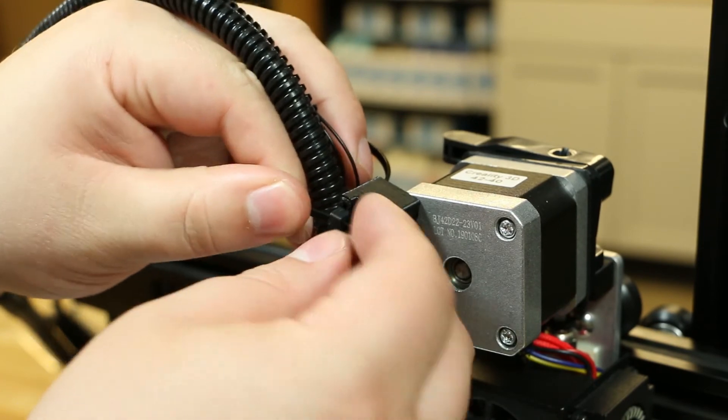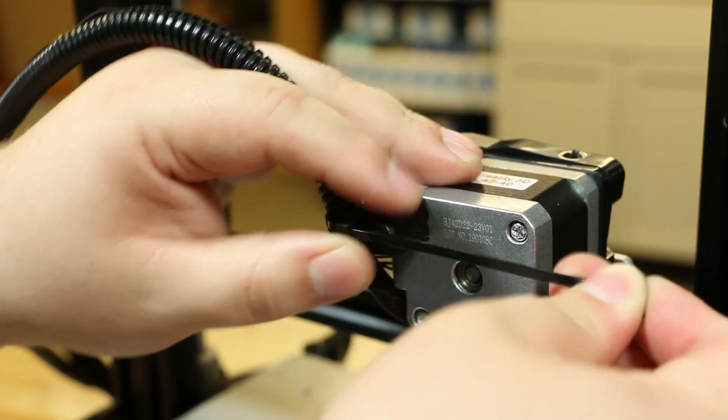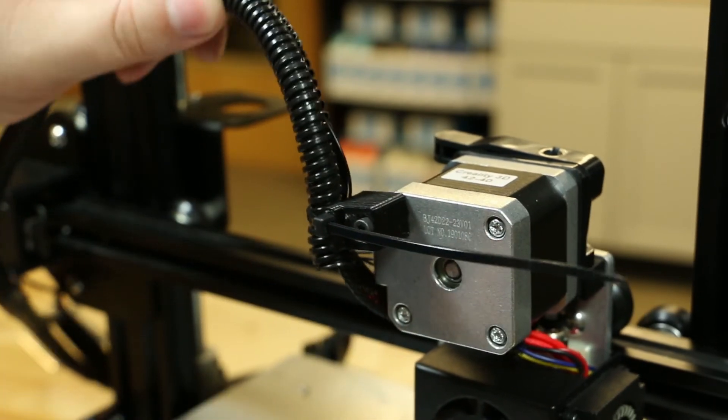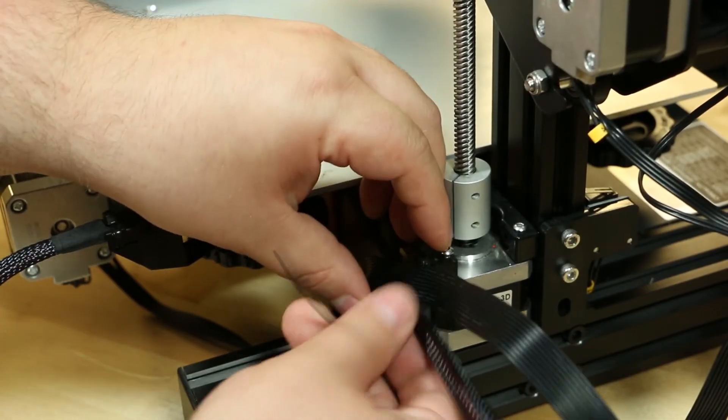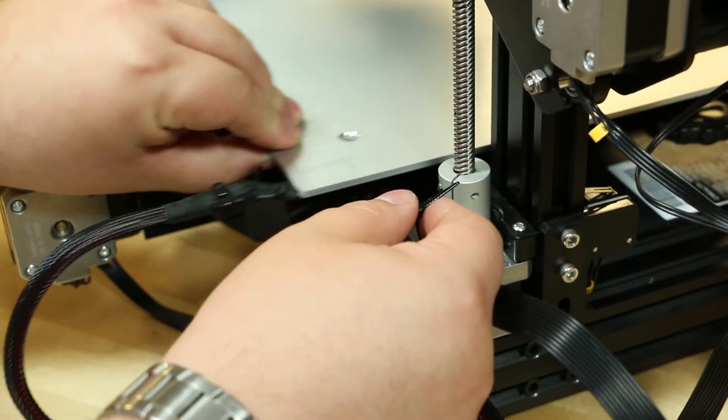When you zip tie the cable to the extruder, make sure you leave a little wiggle room. You want it snug but not strapped to it. Attach the zip tie to the wire. When doing so, make sure the cables don't get caught in the movement of the bed.